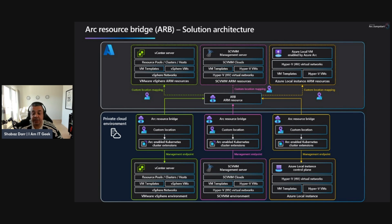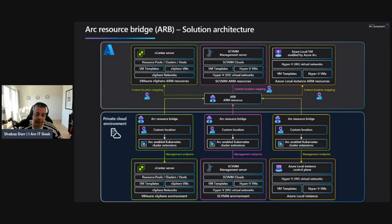To deliver this functionality, the resource bridge hosts additional Azure Arc components including custom location — which we talked about already in this series — and these define the target infrastructure for deployment. There are also cluster extensions which enable private cloud capabilities on the resource bridge, supporting VMware, SCVMM, and Azure Local. And there are Azure Arc agents which form the communication and control layer between Azure and your infrastructure. At the top you've got all the Azure capabilities, and at the bottom your private cloud hosted on-premises services, with the Azure Arc resource bridge bridging the gap between your ARM resources and on-premises.